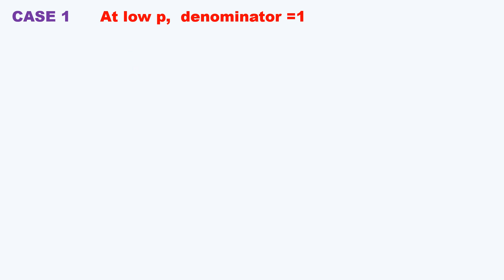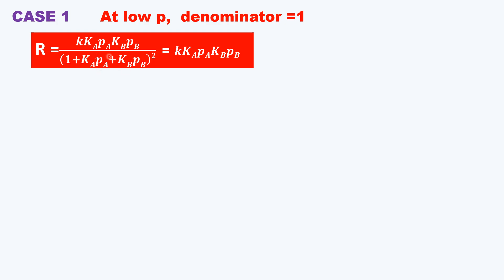There are three cases. Case one: at low pressure, the pressure values approach zero, so the terms KA·PA and KB·PB in the denominator are negligible, making the denominator equal to 1. Therefore, the rate is directly proportional to PA and PB — first order with respect to A and first order with respect to B. The total reaction order is 2. Plotting rate versus pressure of A, keeping pressure of B constant, gives a straight line.